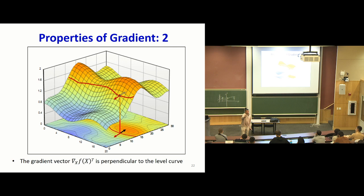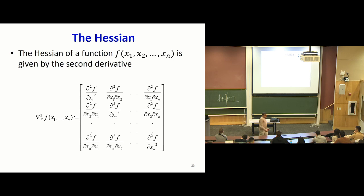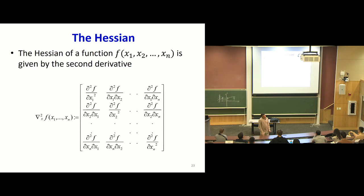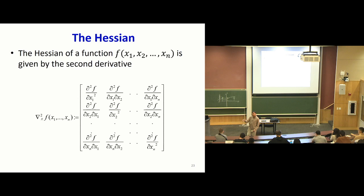There's also the notion of a second derivative for functions of multiple variables, called the Hessian, which is a matrix of second derivatives. The diagonals are the second derivatives with respect to one variable; every other term is a second derivative with respect to two variables. The Hessian is a generalization of the second derivative for a scalar function. The eigenvectors of the Hessian give you the directions in which the function increases or decreases fastest, and the corresponding eigenvalue gives you the direction of the curvature. If the eigenvalue is zero, that's likely an inflection point.